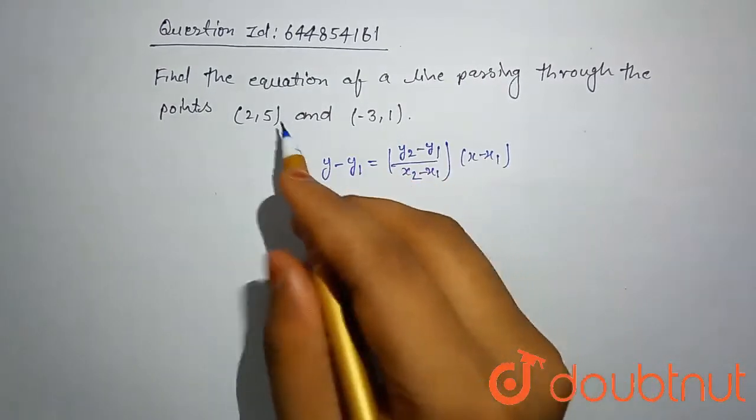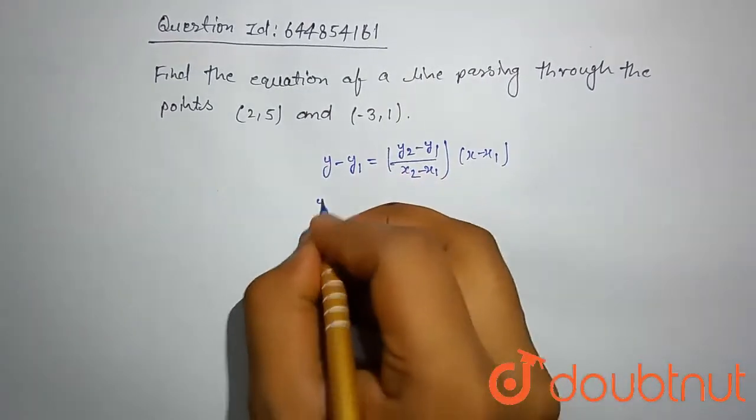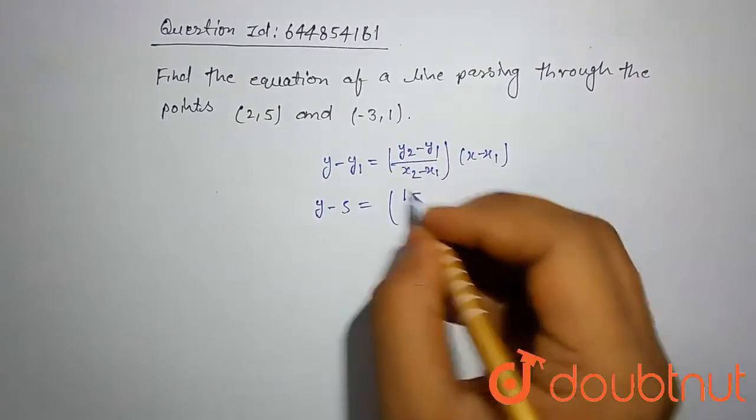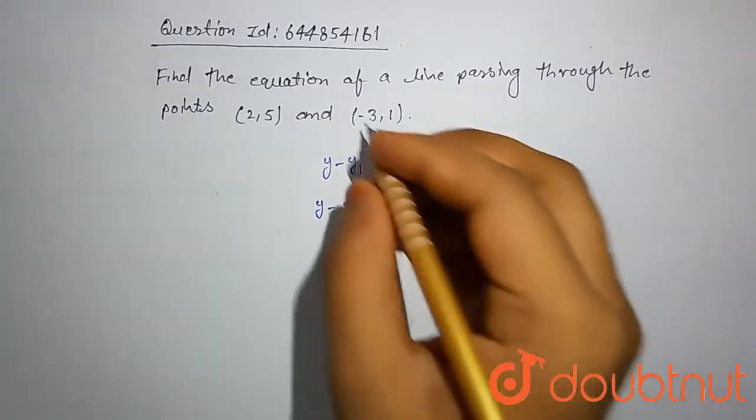Let's put this value here: y minus y1, which is 5, is equal to y2, 1 minus 5, divided by -3 minus 2, into x minus 2.